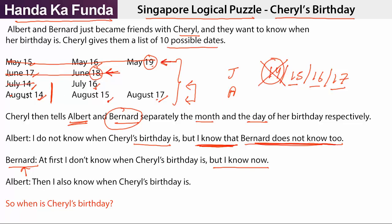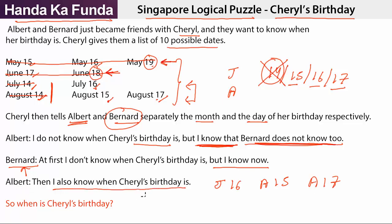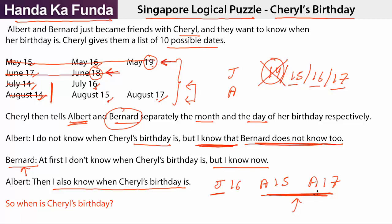Which means July 14 and August 14 are also eliminated. Now what are we left with? We are left with 3 dates: July 16, August 15, and August 17. Now what does Albert say? Then I also know when Cheryl's birthday is. The only options Albert has are July or August. If he had heard August, he cannot say whether it is August 15 or August 17. But now he is sure, which means he could not have heard August — he must have heard July. And Cheryl's birthday that we have been trying to figure out is indeed July 16.